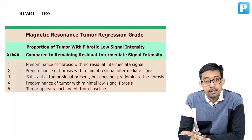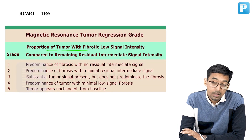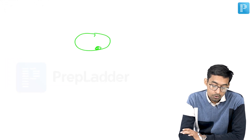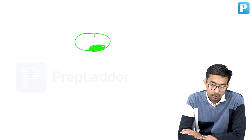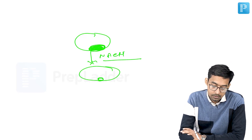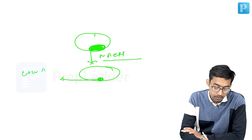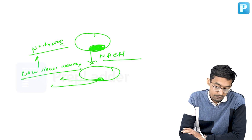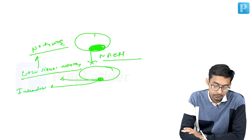This is dependent on two things: first is the proportion of tumor with fibrotic low signal intensity, and remaining residual intermediate signal intensity. After neoadjuvant treatment there is some reduction in the tumor. Here, if there is low signal intensity that means no tumor, and if there is intermediate signal intensity that means residual tumor.